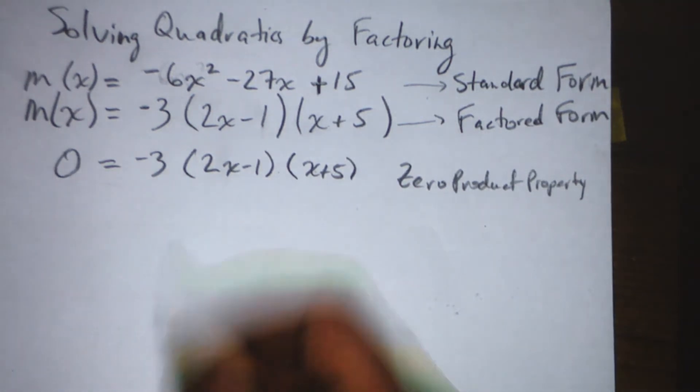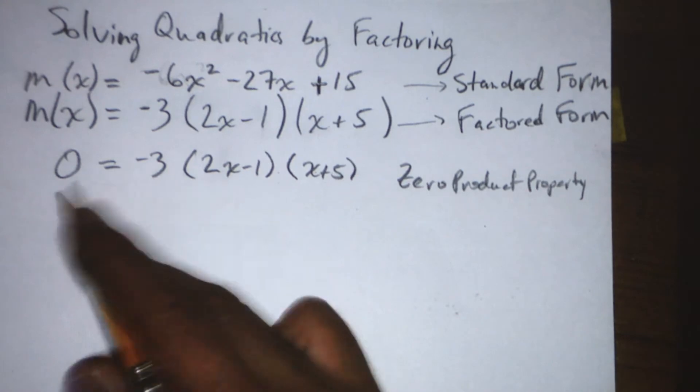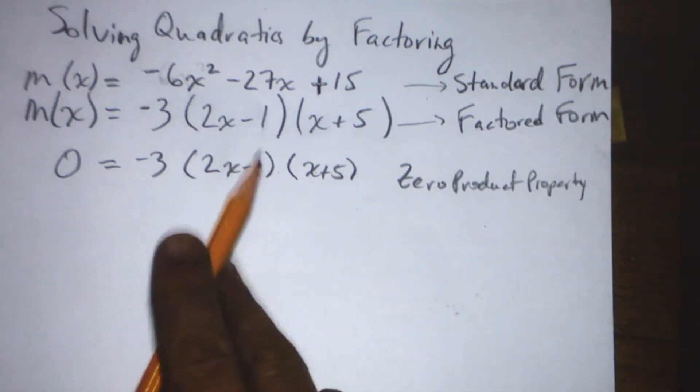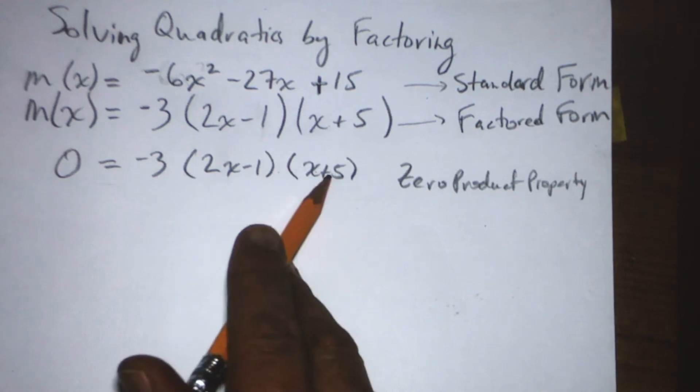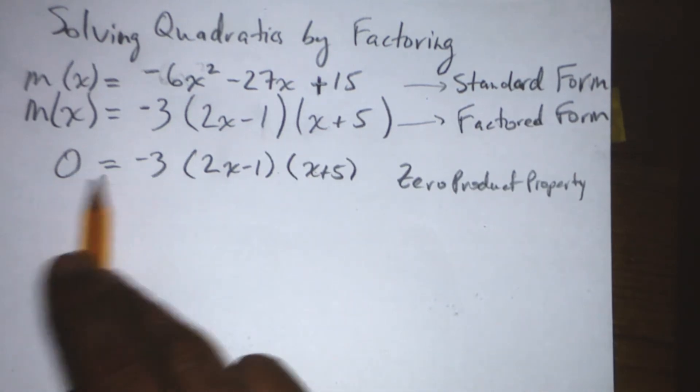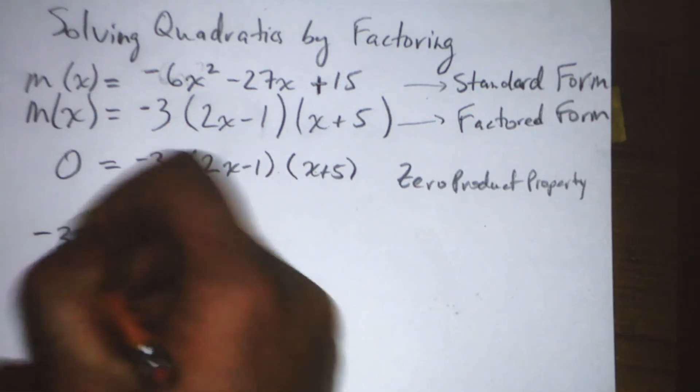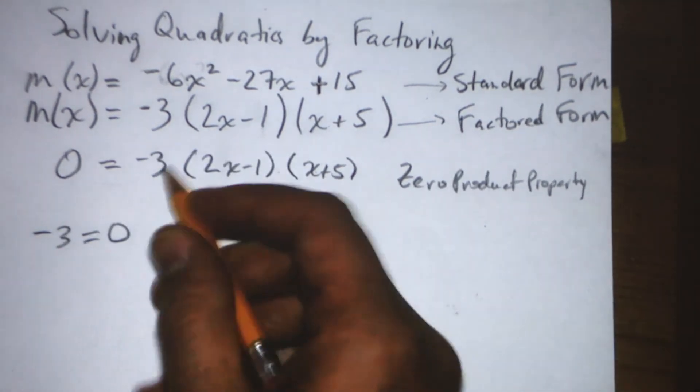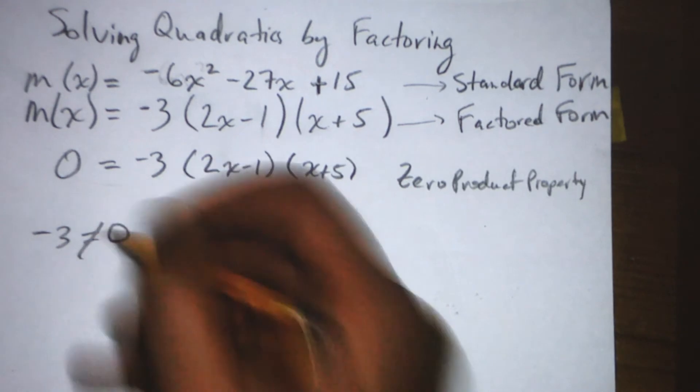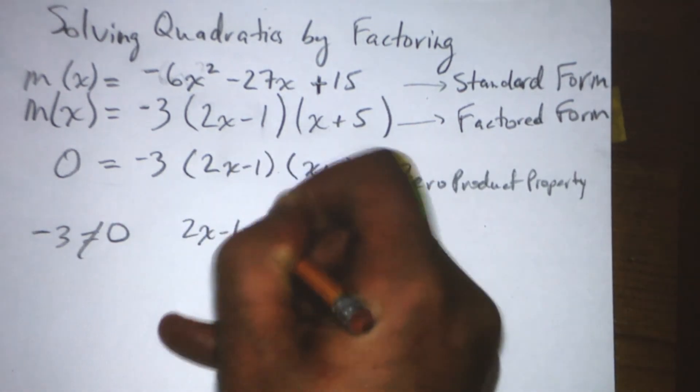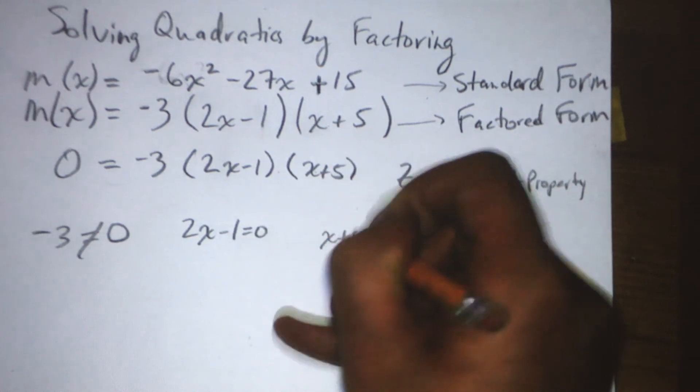Now, obviously, we cannot get negative 3 equal to 0. But we can get this factor equal to 0, and we can get this factor equal to 0. So just for the sake of habit, we will say each factor equal to 0. Except on this one, we'll remind ourselves that this is impossible. But with these ones, we can do it. 2x minus 1 equals 0, and x plus 5 equals 0.